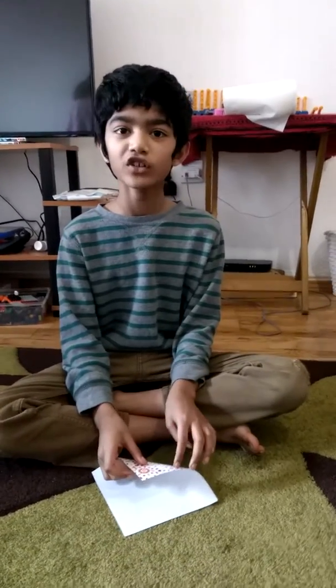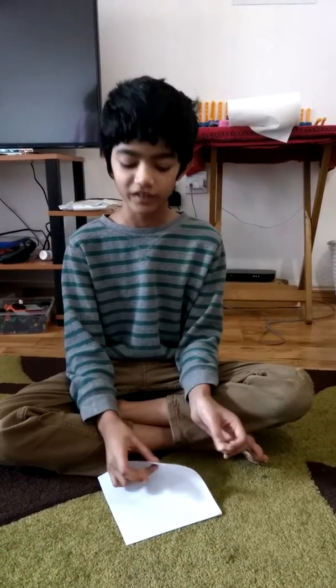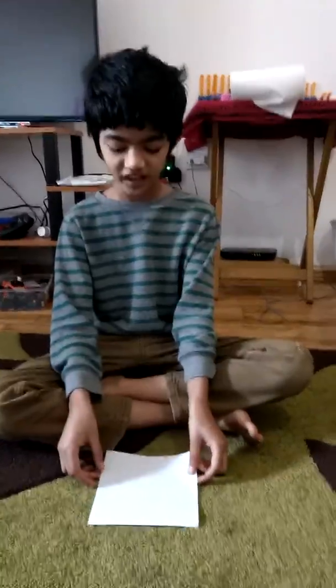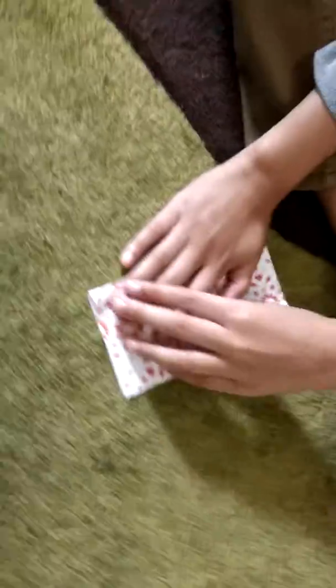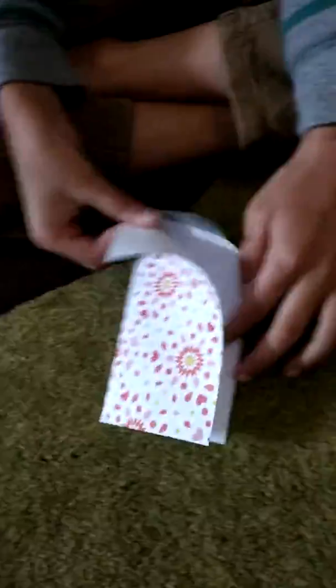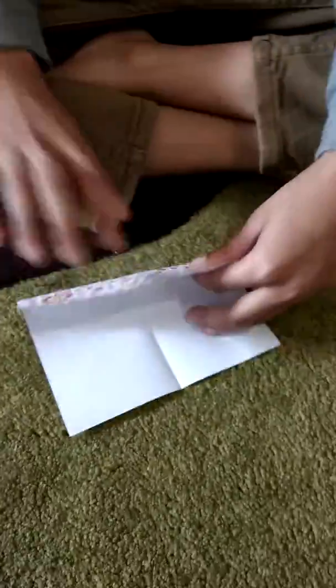So today we are going to make an origami picture frame. First, you start from the right side. Fold it in half this way. Then fold it in half the other way.